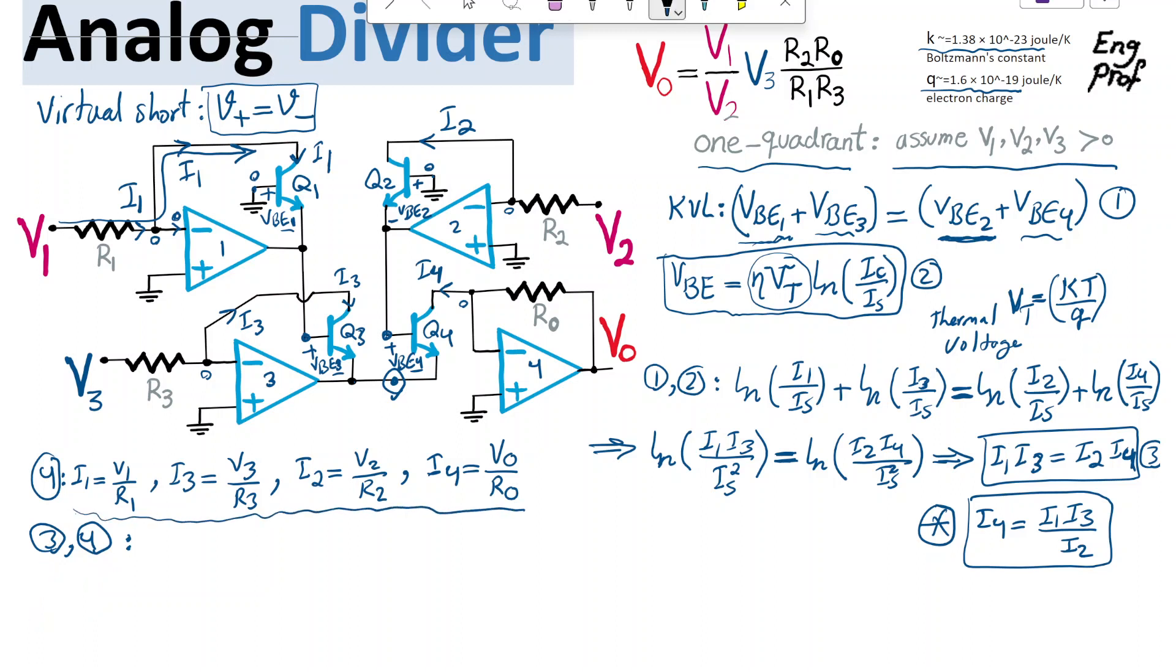I can just substitute in equation 3, using all the equation that I found in equation 4, effectively. So, using that, I can say, when I'm indicating I1 times I3 is equal to I2 times I4,